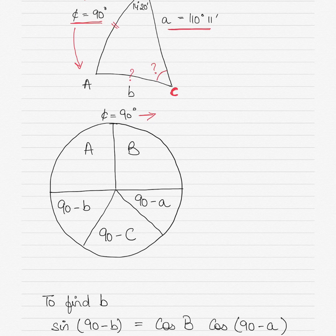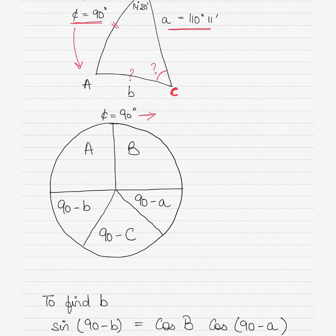In the bottom semi-circle, you always add a prefix of 90 minus, whether it's a side or angle. In the middle part of the bottom semi-circle, you write the remaining angle, which is 90 minus capital C. So: write the 90-degree side outside, write angles A and B in the top, then 90 minus side a, 90 minus side B, and 90 minus angle C in the bottom.